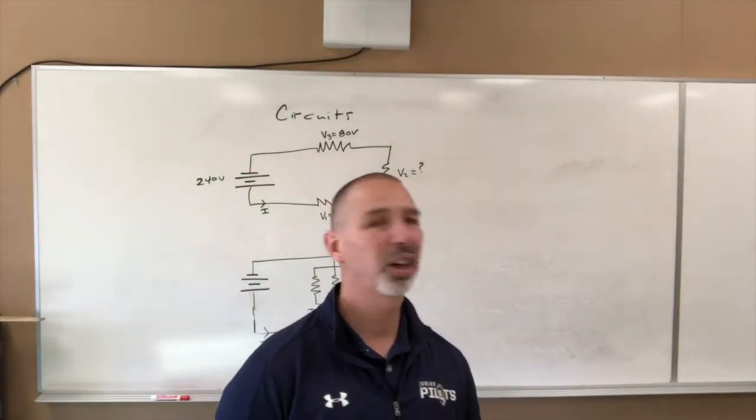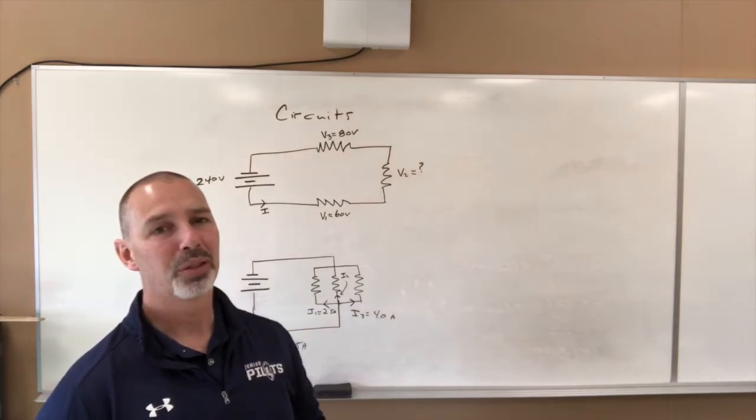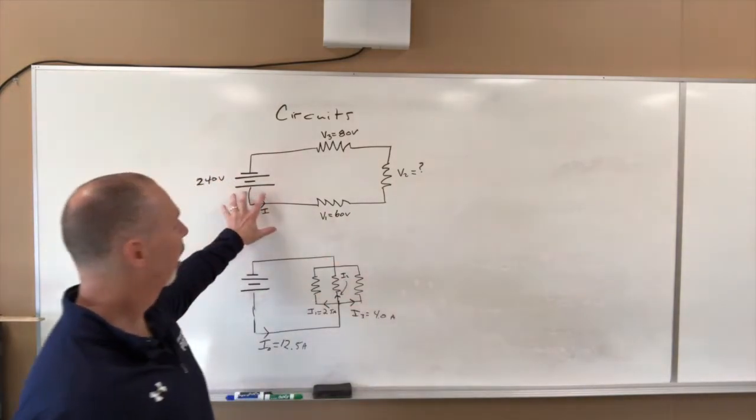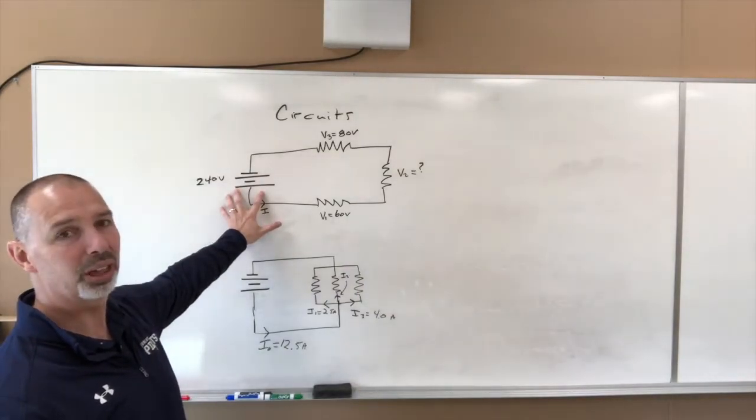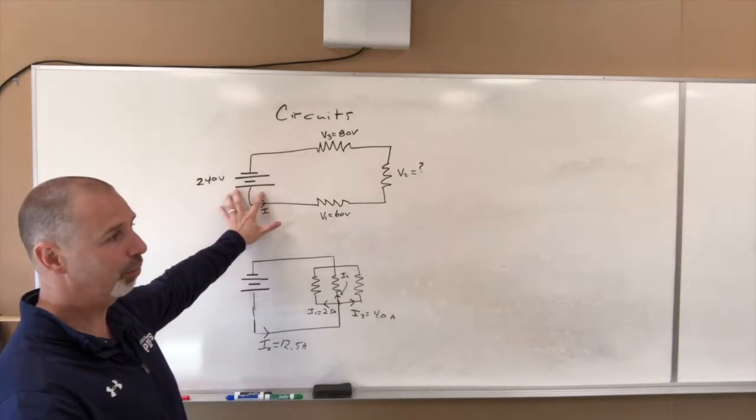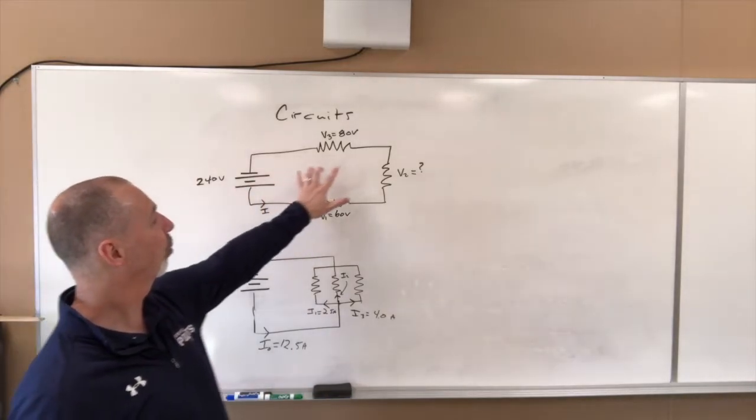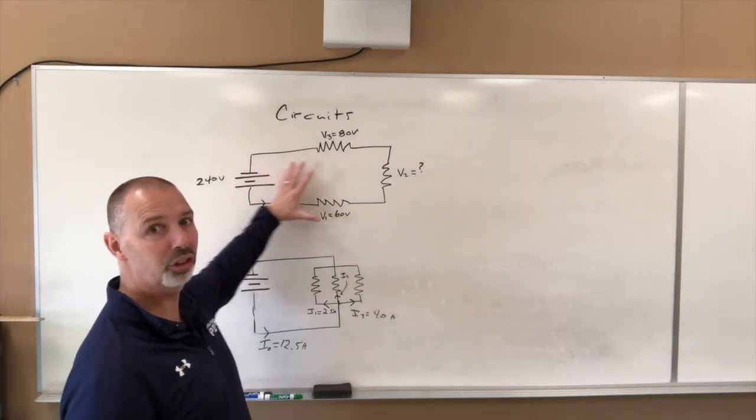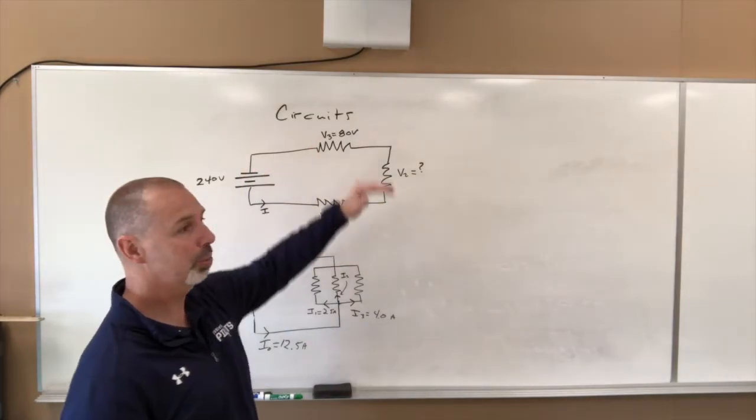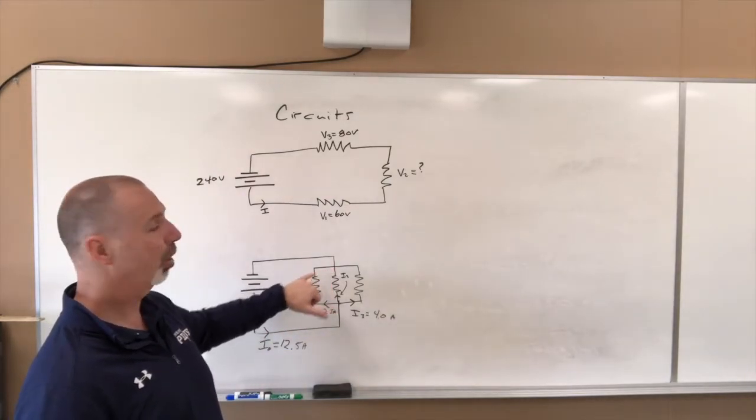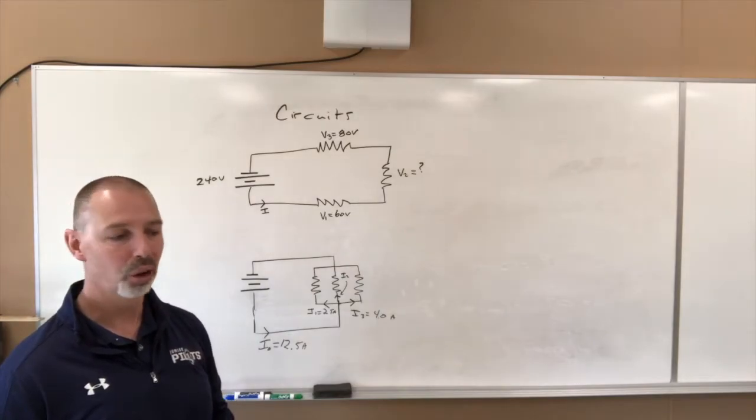Yesterday when we were talking about circuits, we talked about the fact that we can have circuits with a potential difference at the front end here, something that creates potential difference, a cell, battery, whatever it might be. We have resistors, and we have what we call a series circuit, where there was simply one path, or we had a parallel circuit where there were multiple paths for the current to go.